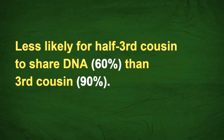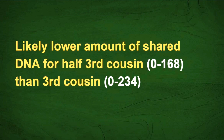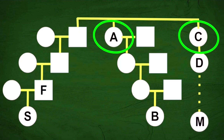It's less likely for a half-third cousin to share DNA — about 60% of the time — than just a regular third cousin, which shares DNA about 90% of the time. So it's still within the realm of possibility. Also, the amount of shared DNA for a half-third cousin is going to be less than for a third cousin, so that's one way you might be able to tell how much DNA is being shared. If B and M shared more than 168 centimorgans, then they couldn't be half-third cousins. But let's look at another possibility.